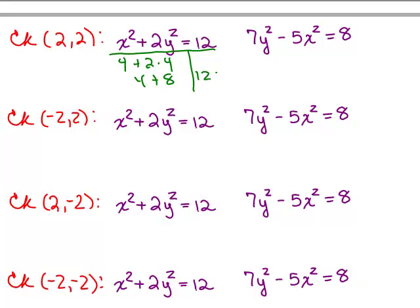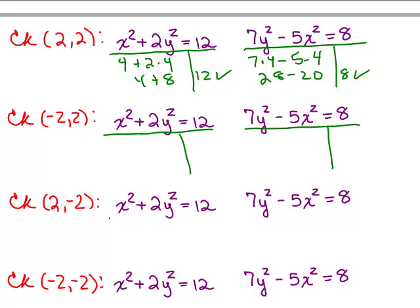4 plus 8 is 12, so that checks. And then if we plug in 2 for y, I'll have 7 times 4, put in 2 for x, 5 times 4, we get 28 minus 20 and that's 8. So that checks and then you go through and do these for every single one of these.